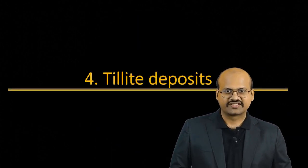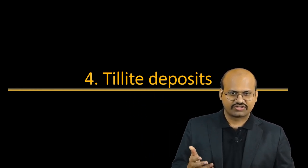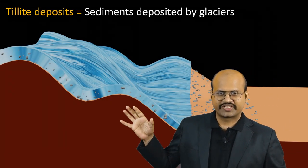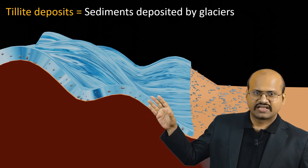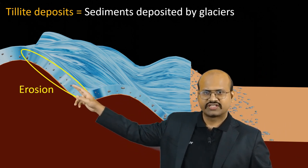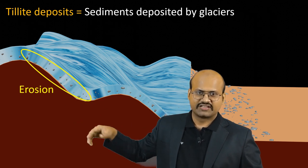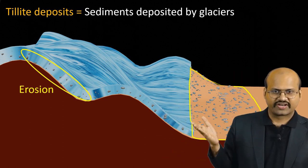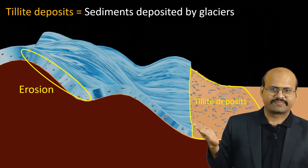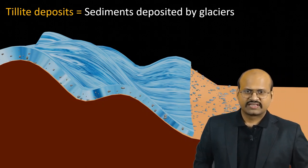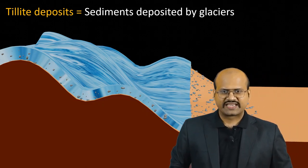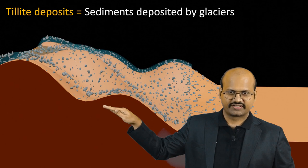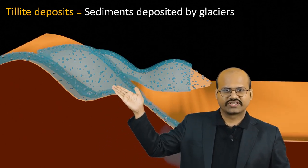The next evidence is the presence of tillite deposits across continents. Tillites are glacier deposits — that is, sediments deposited by glaciers. Glaciers which flow over mountains cause erosion of underlying land masses. These eroded rocks are carried by glaciers and deposited at the end of glaciers. These deposits are called tillite deposits or glacier deposits. The glaciers carry large amounts of rocks, and if the glacier melts, all these rocks are deposited, and over years other layers are formed over these deposits.